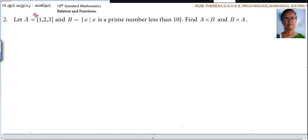Listen here. Let A equal to 1, 2, 3. B equal to x such that x is a prime number less than 10. Find A cross B and B cross A.